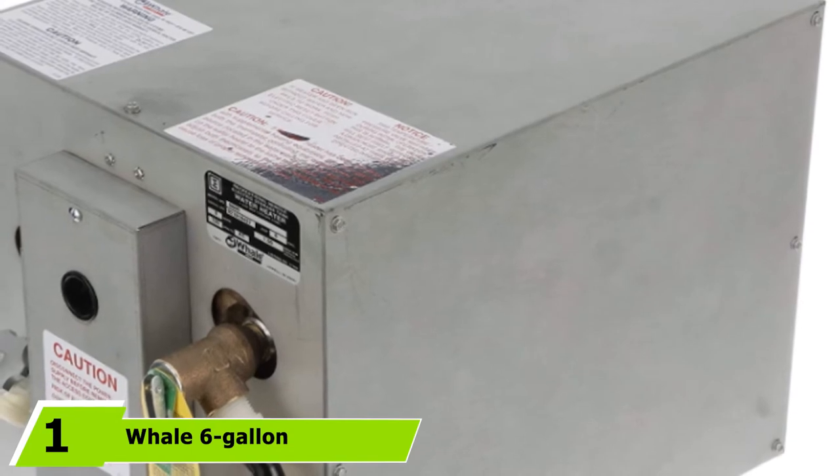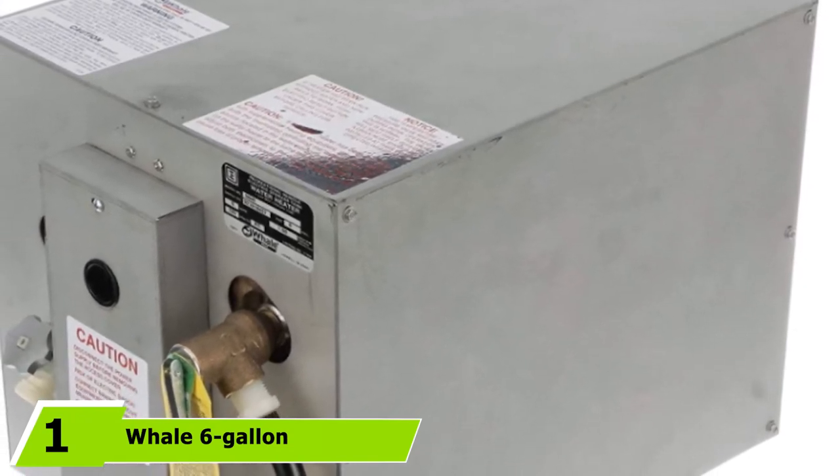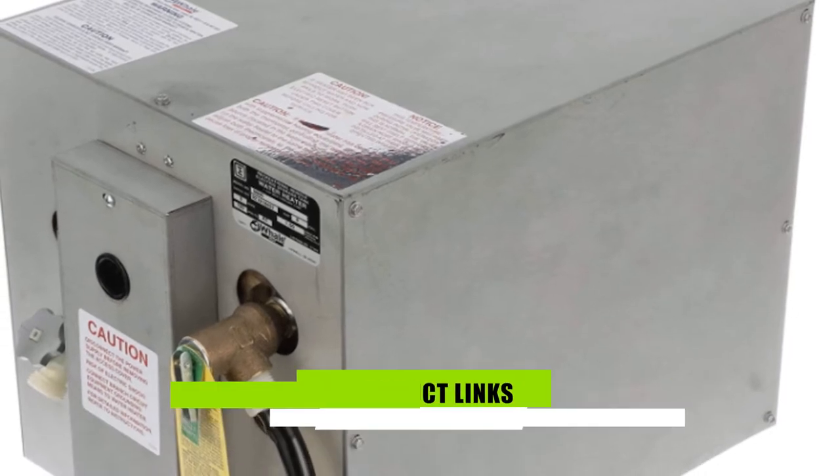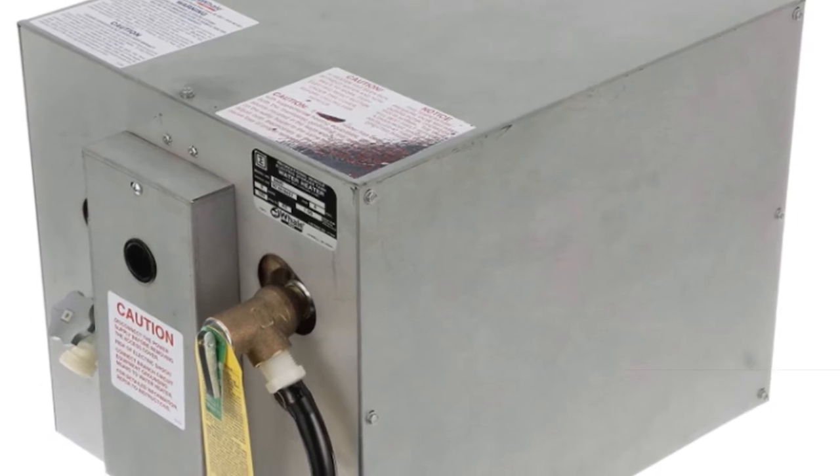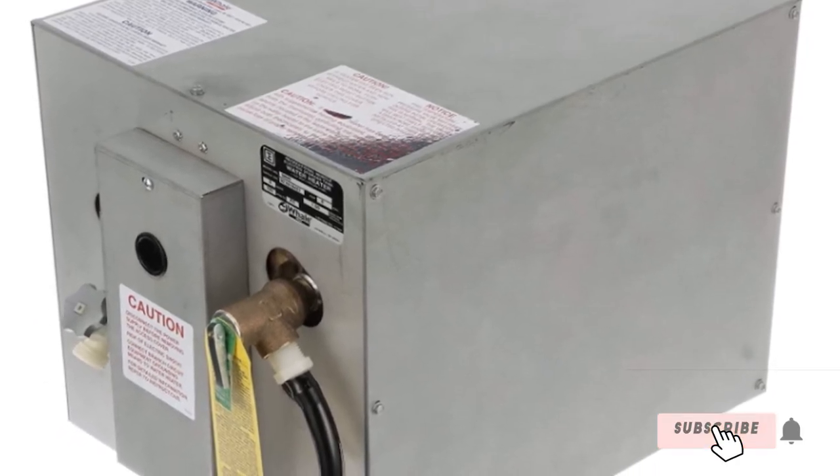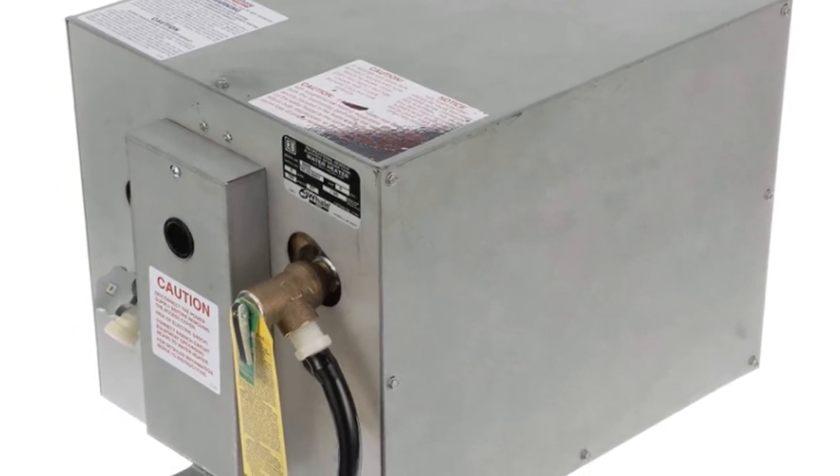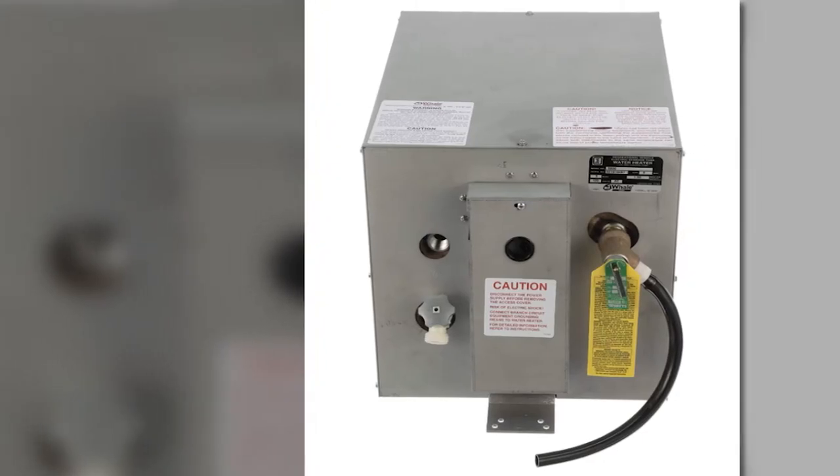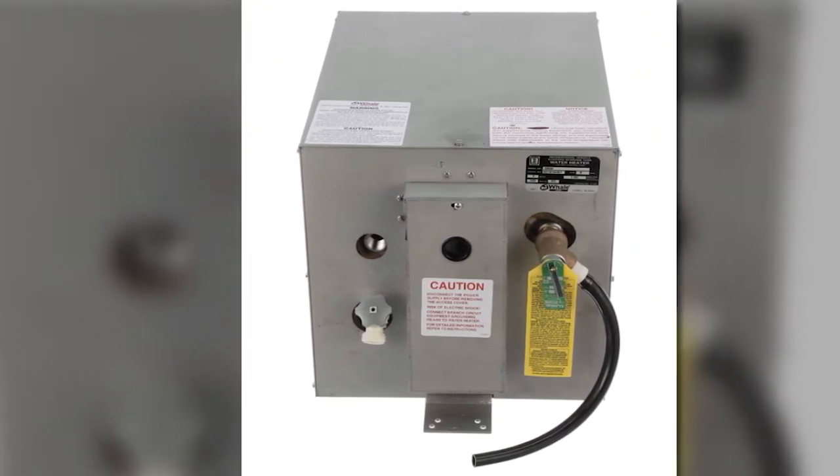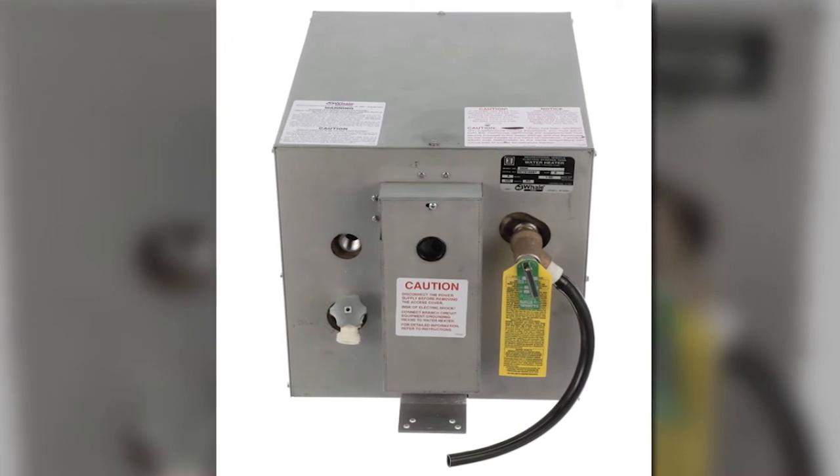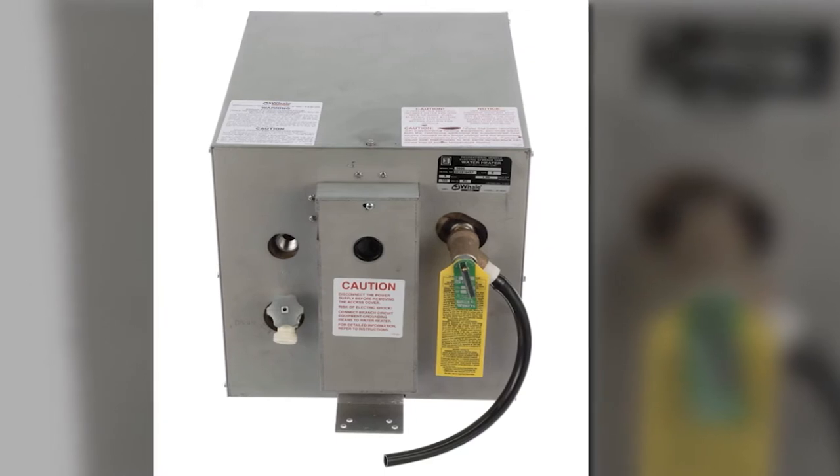At the first position of our list, we have Whale 6-Gallon Premium Water Heater. We have to admit, we're sold by the name itself already. This fantastic unit is a 6-gallon capacity of 120V marine water heater with a sturdy double-walled front heat exchanger. We love the double-walled heat exchange system because it uses the boat's engine to heat the water. The water gets heated by the engine's closed cooling system while your boat is running. Its heating process is highly efficient thanks to the double-walled heat exchange.